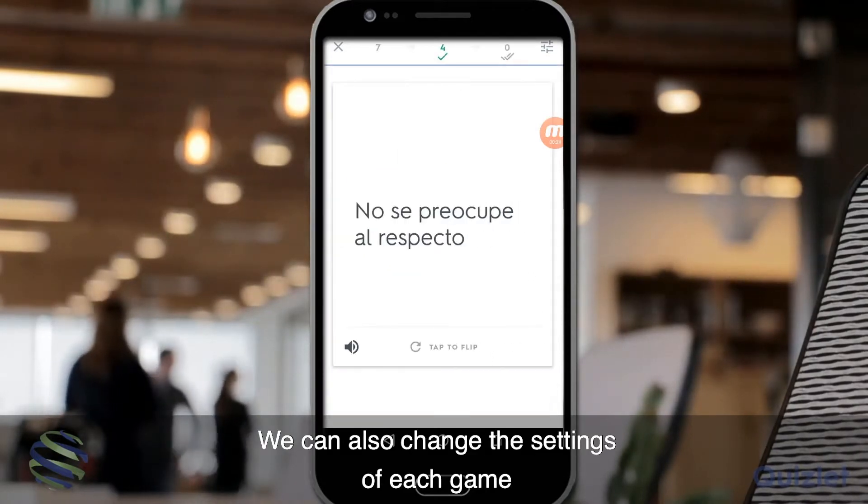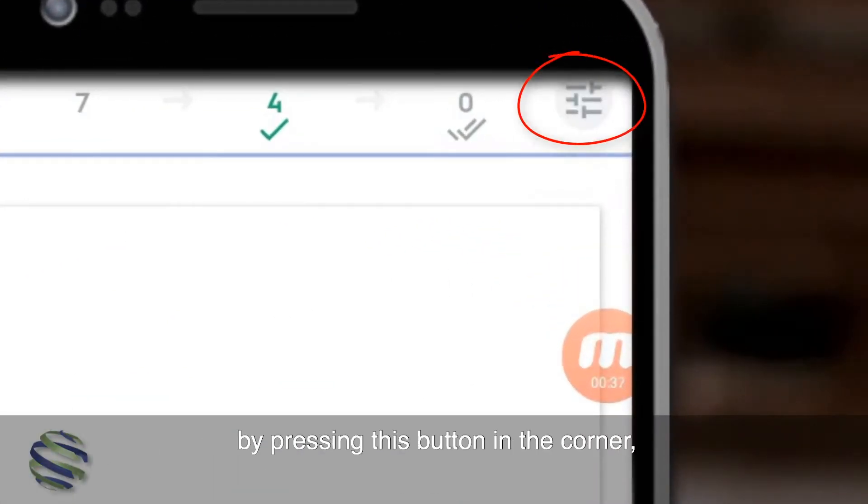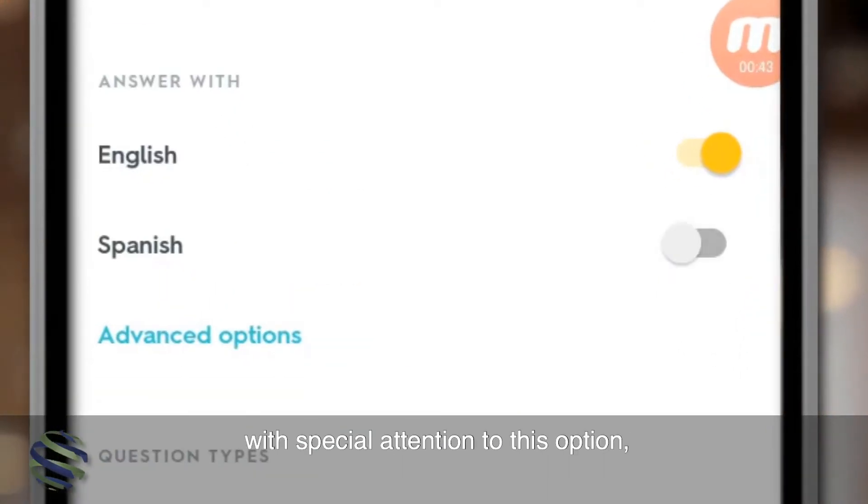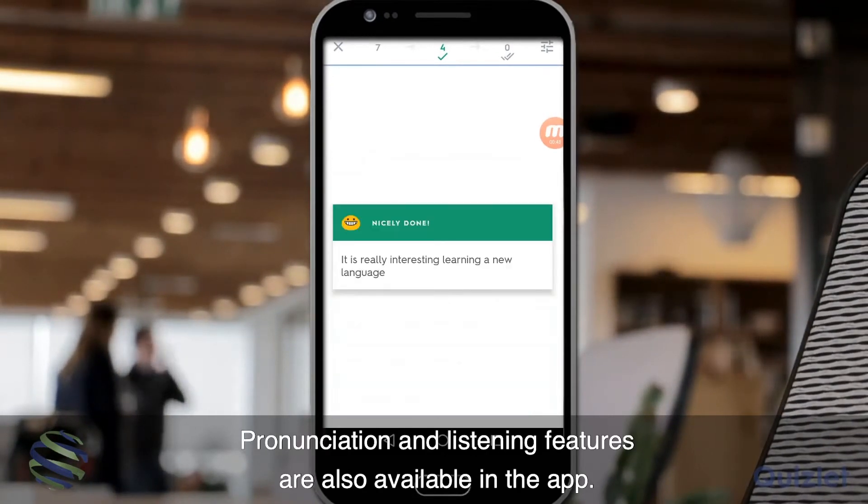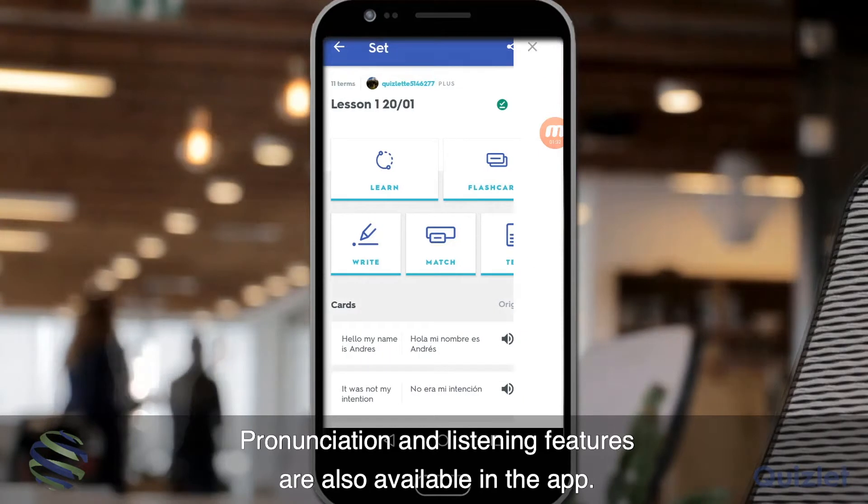We can also change the settings of each game pressing this button in the corner with special attention to this option where we can specify the answering language. Pronunciation and listening features are also available in the app.